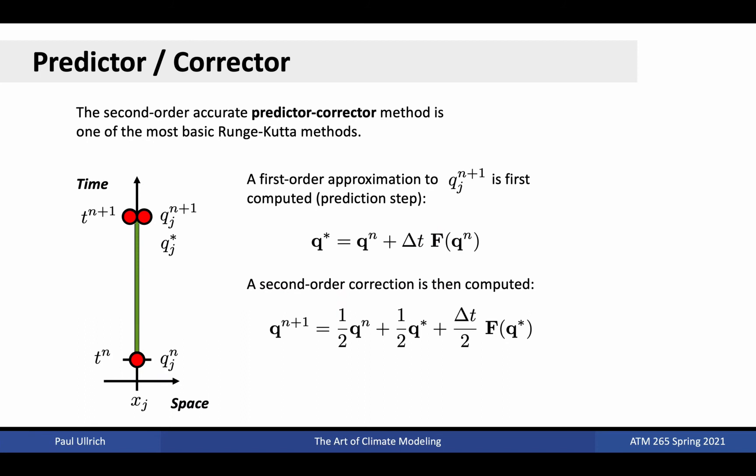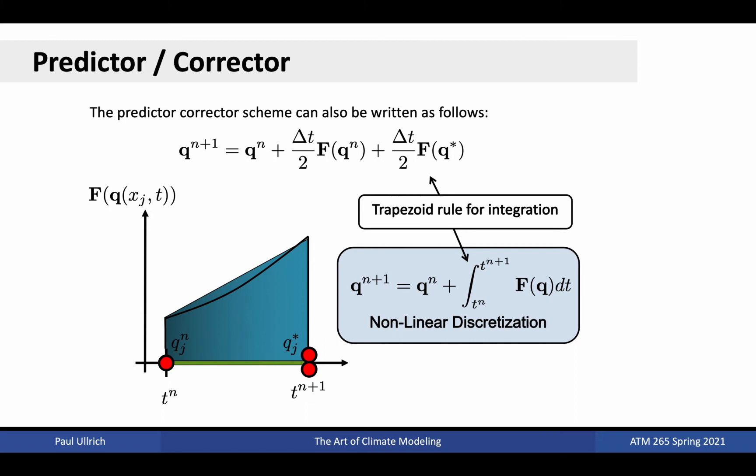Our first example of a Runge-Kutta method is the second order accurate predictor-corrector method. Recall that second order in this case means that the method will be exact for both a constant and a linear time tendency f. When employed, this method first calculates a first order approximation to q_j at time n plus 1 as part of the prediction step. Observe that this approach is identical to the forward Euler method. We denote that value with a superscript asterisk, as it is not our final estimate of the state at time n plus 1. With the prediction in hand, we then apply a correction to the predictor as follows. First, we estimate the state halfway through the time step as the average of the initial state and the predicted state. Second, we apply a half a time step using the time tendency evaluated on the predicted state. The result of this two-part calculation then becomes our estimate of the state at time n plus 1.